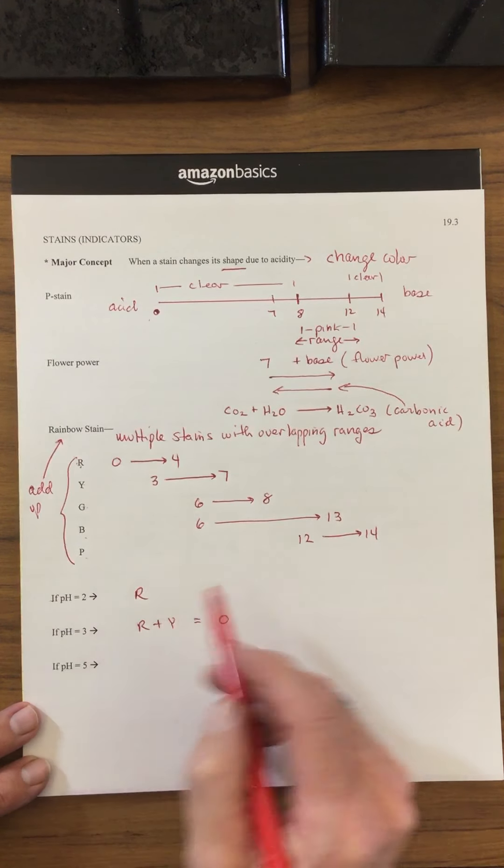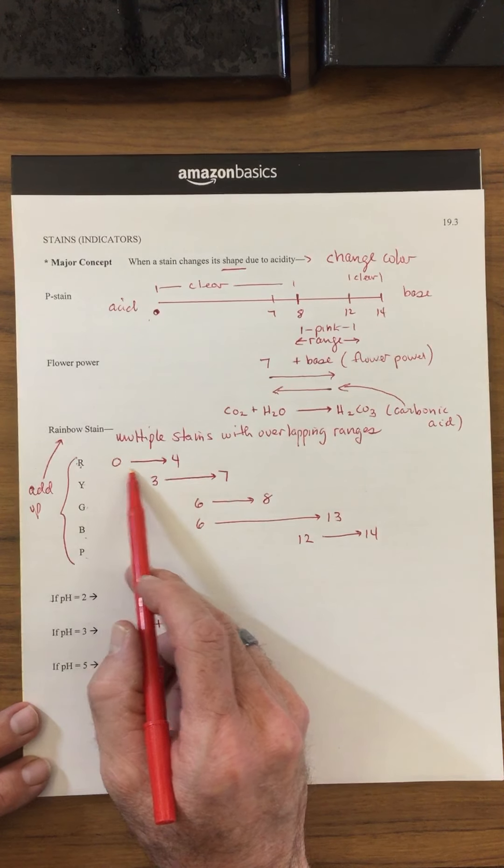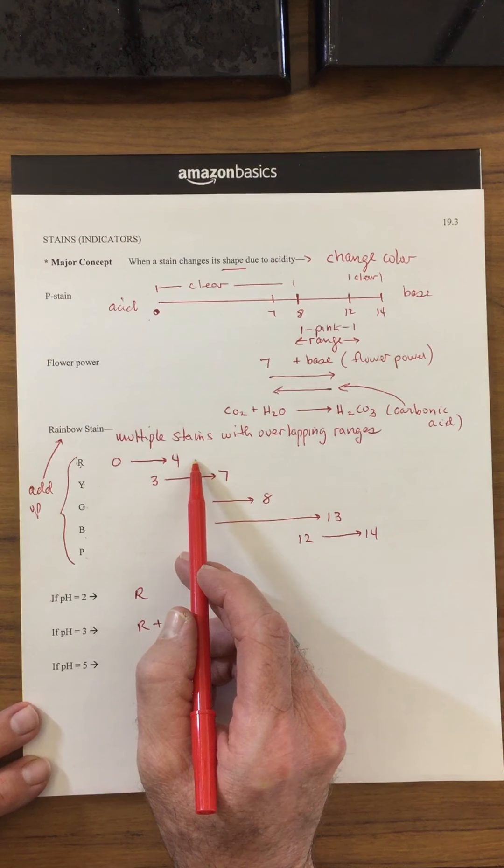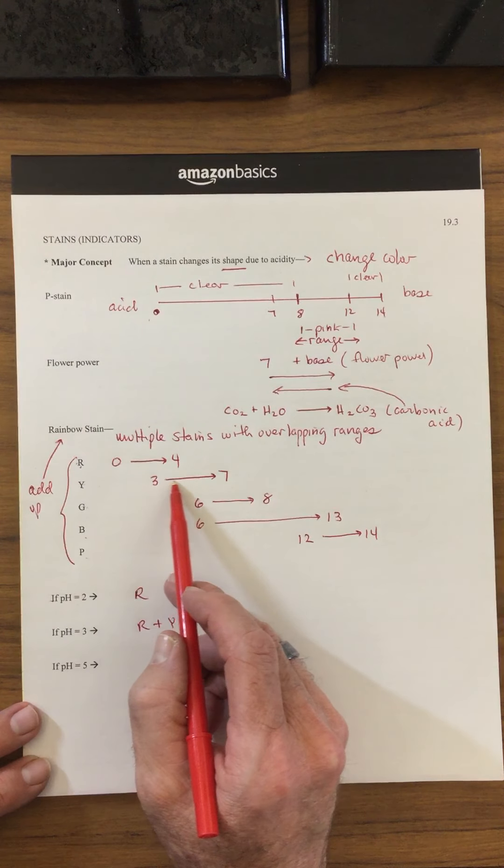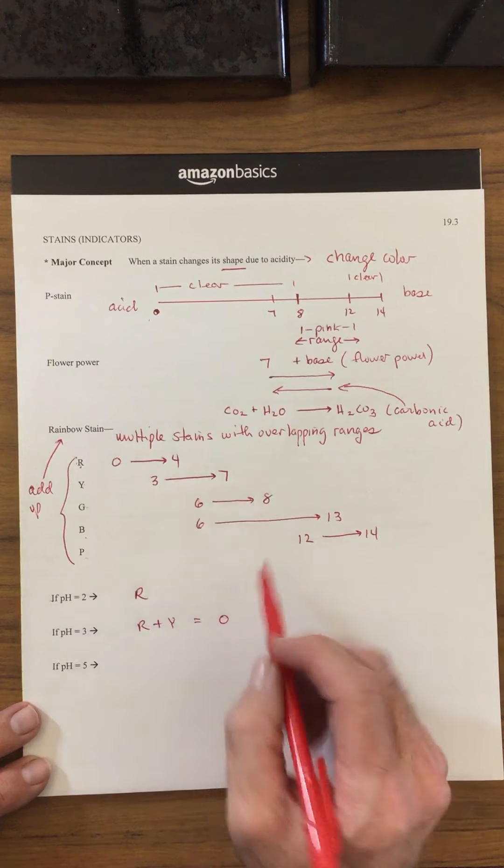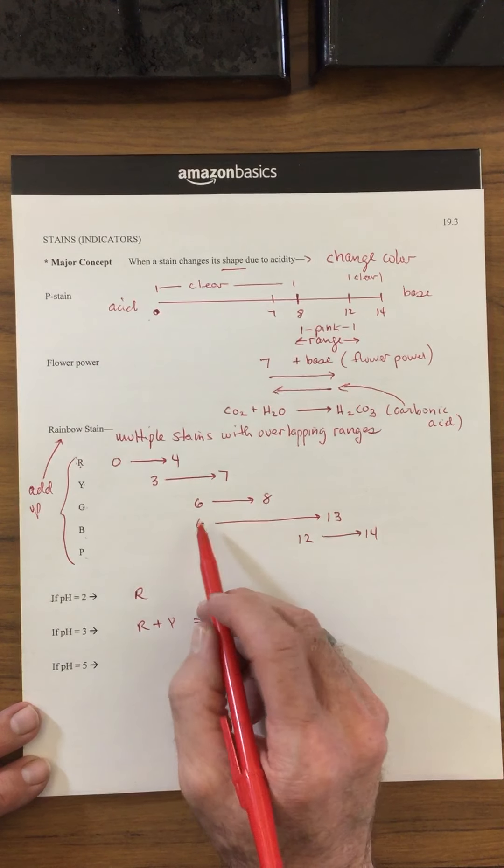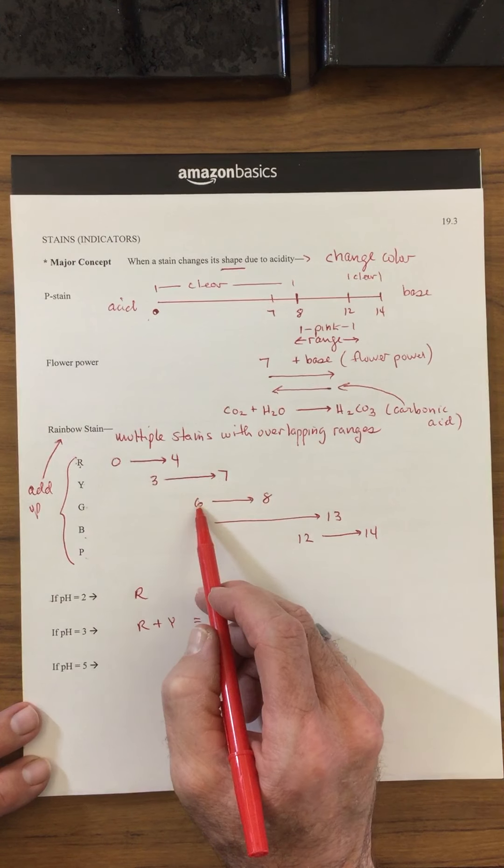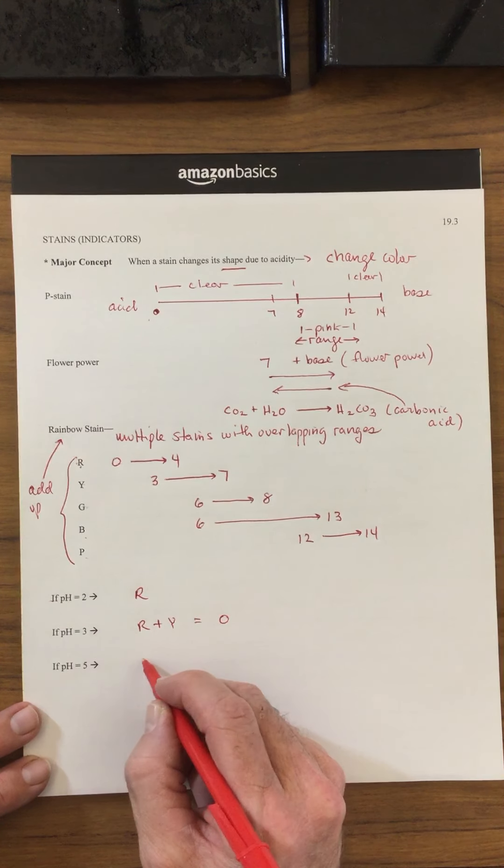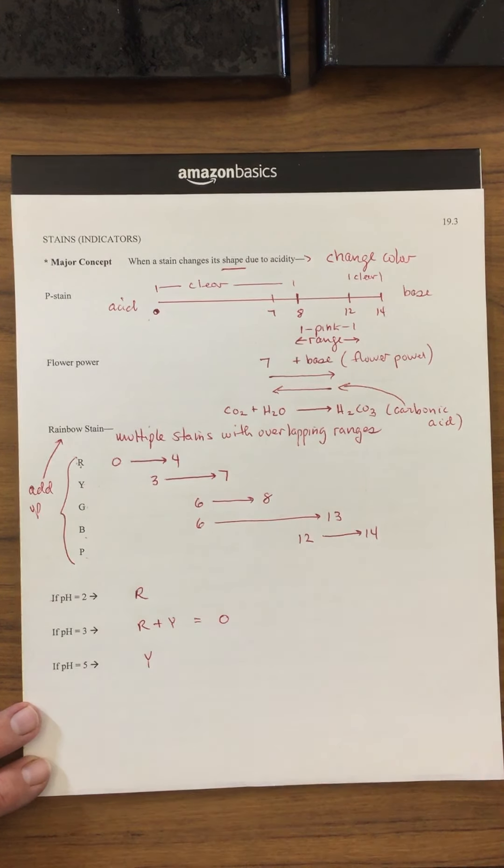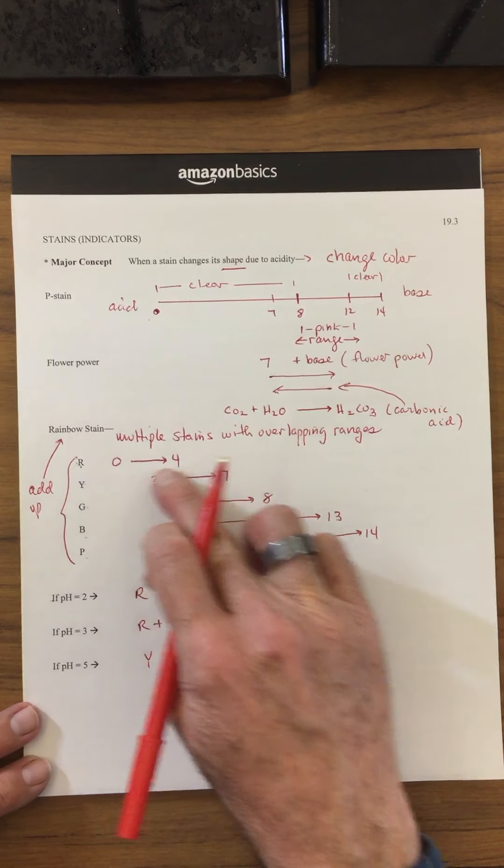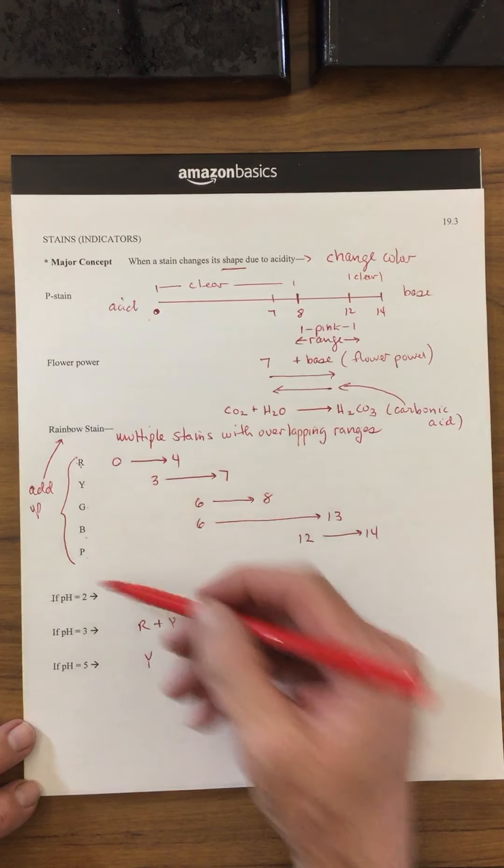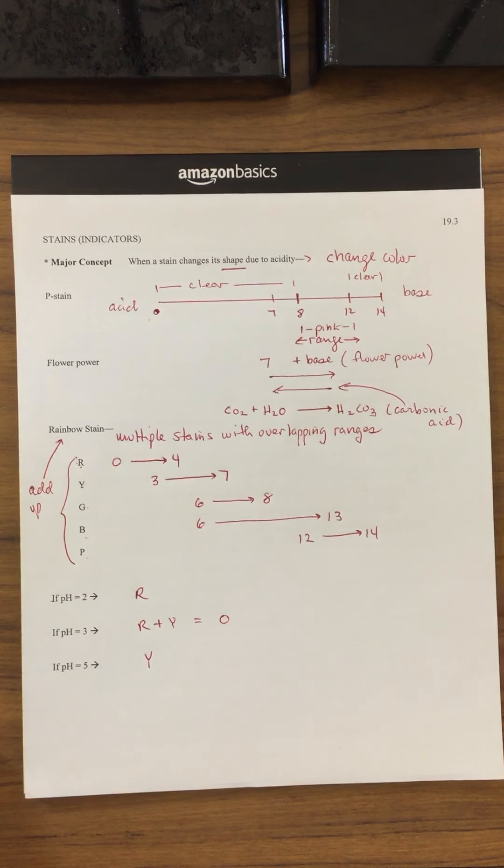Let's take a look at a pH of 5. At pH of 5, will the red be activated? No, we've left its range. Will the yellow be activated? Yes, because it's between 3 and 7. Will the green be activated? No, because we haven't reached 6 yet. So at a pH of 5 it'll be yellow. So each of these overlapping stains has the ability to create a rainbow effect depending upon your pH.